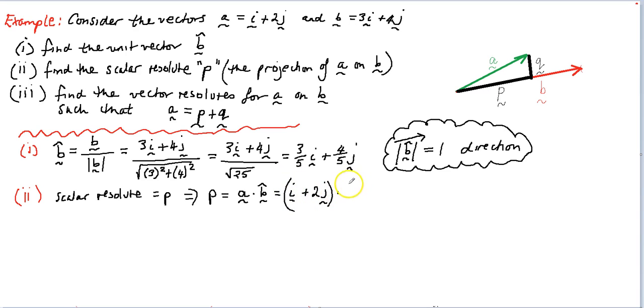And we take the dot product with the unit vector, which we worked out just before in step 1. And to work out the dot product, we just multiply the corresponding components and add them. So 1 times 3 fifths plus 2 for the J components times 4 fifths, which equals 11 fifths. So this is the projection scalar quantity, which represents how far onto B, if you were able to cast a shadow, what the size of P would be.